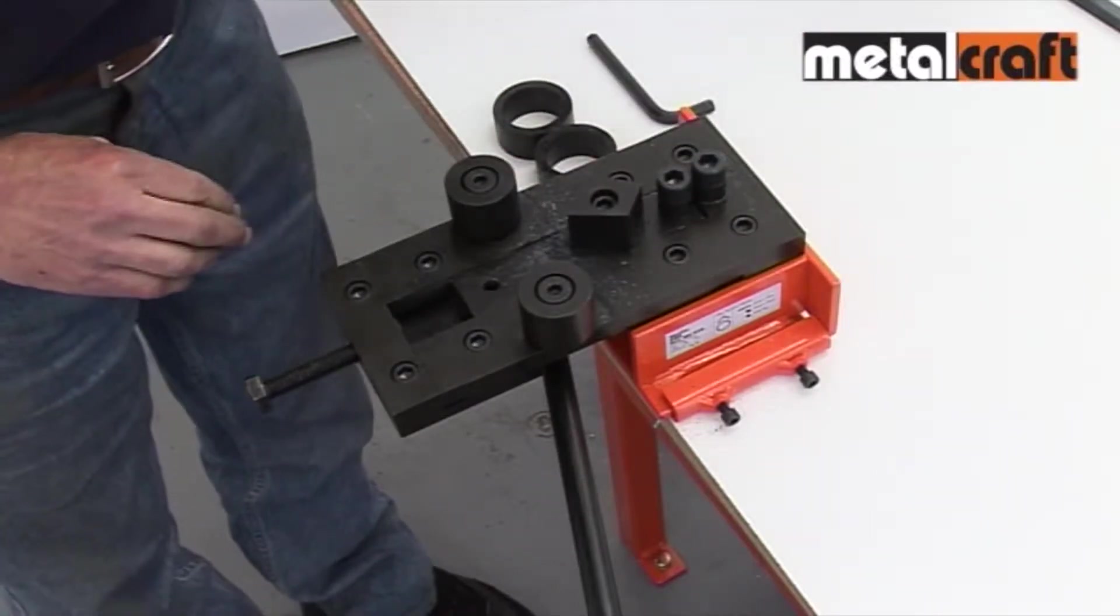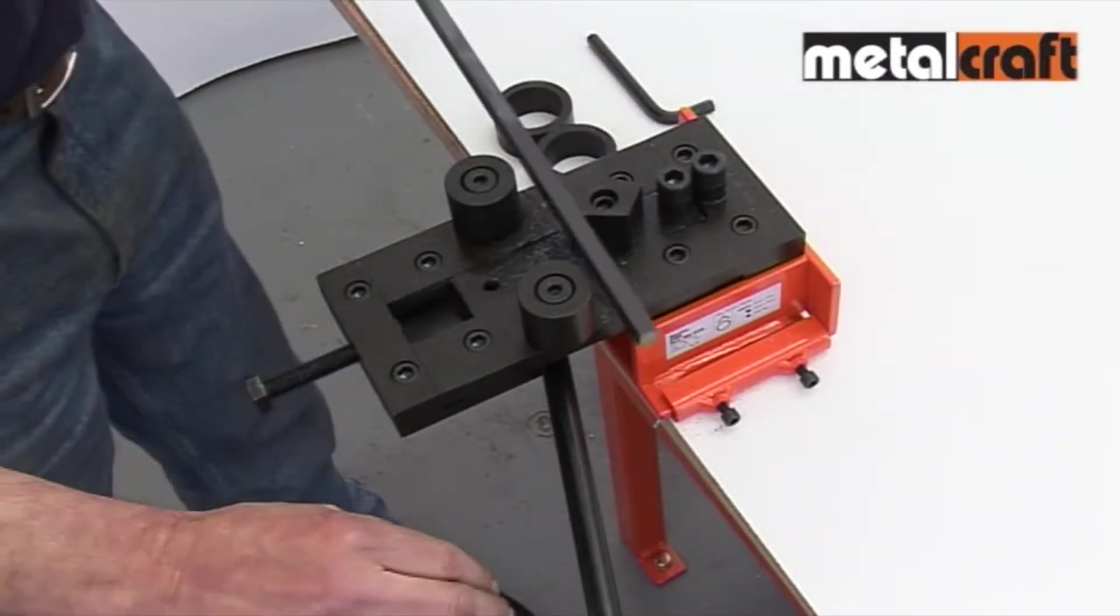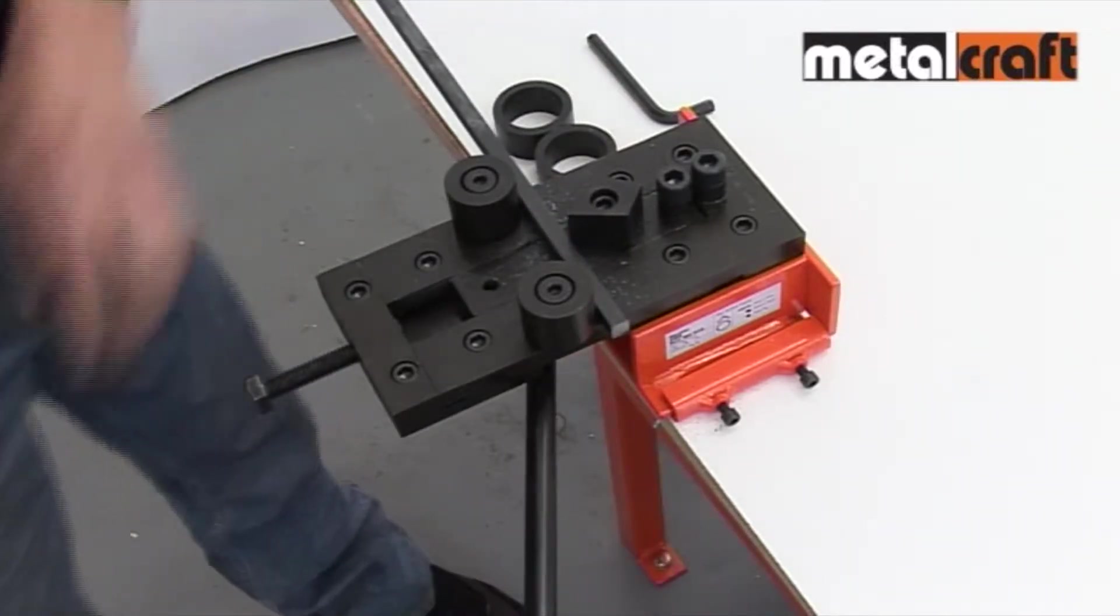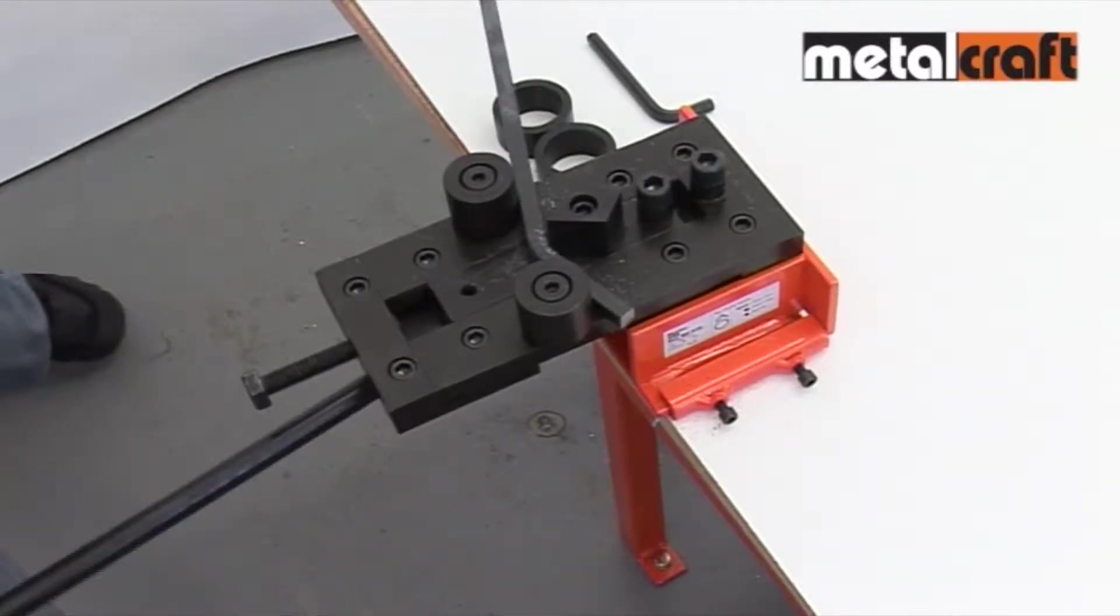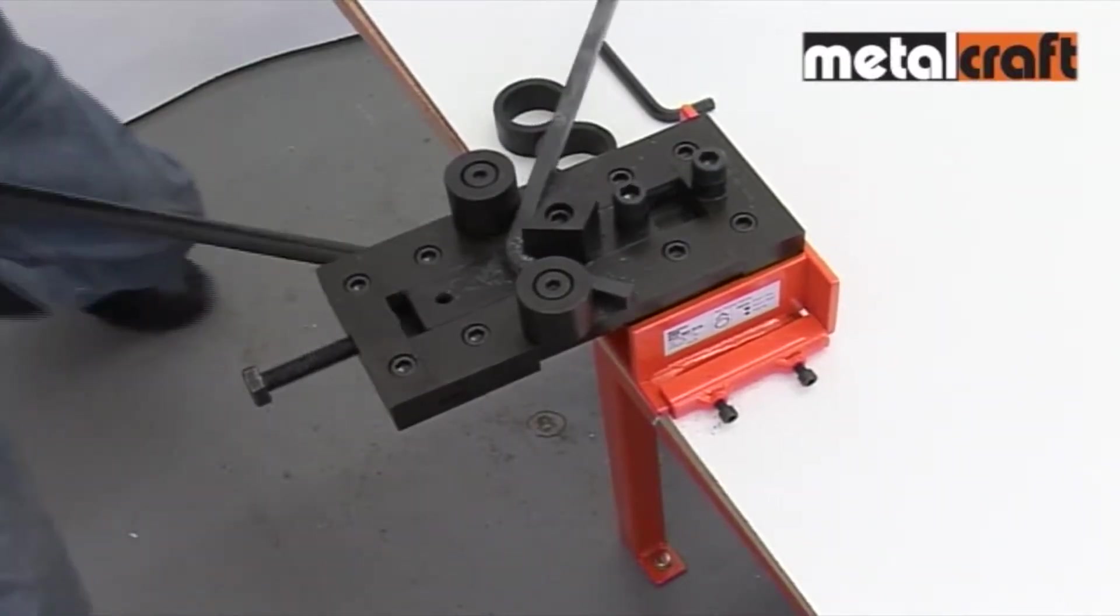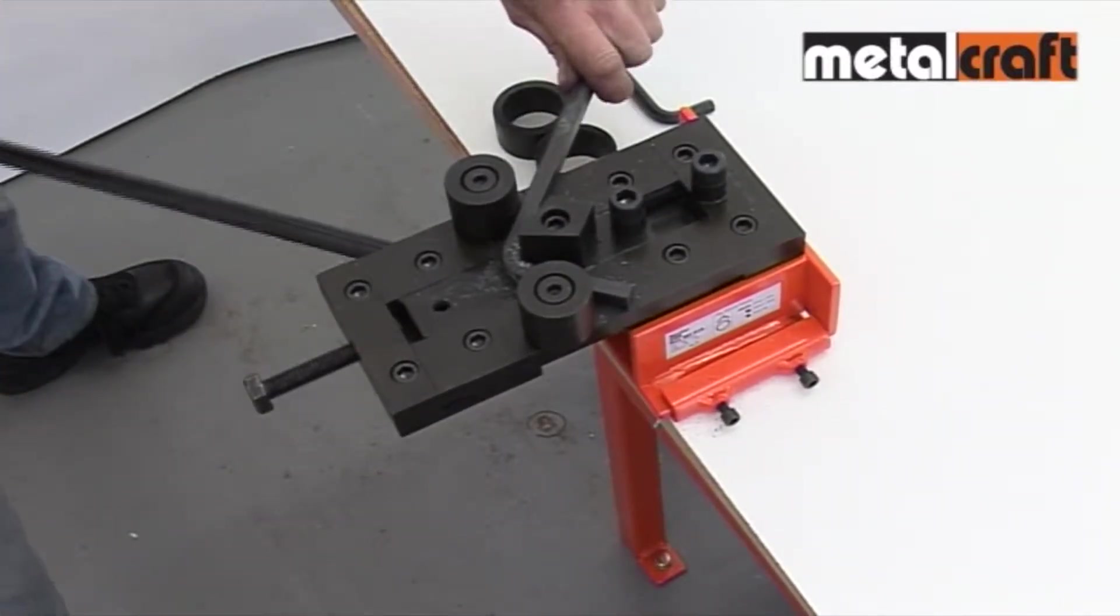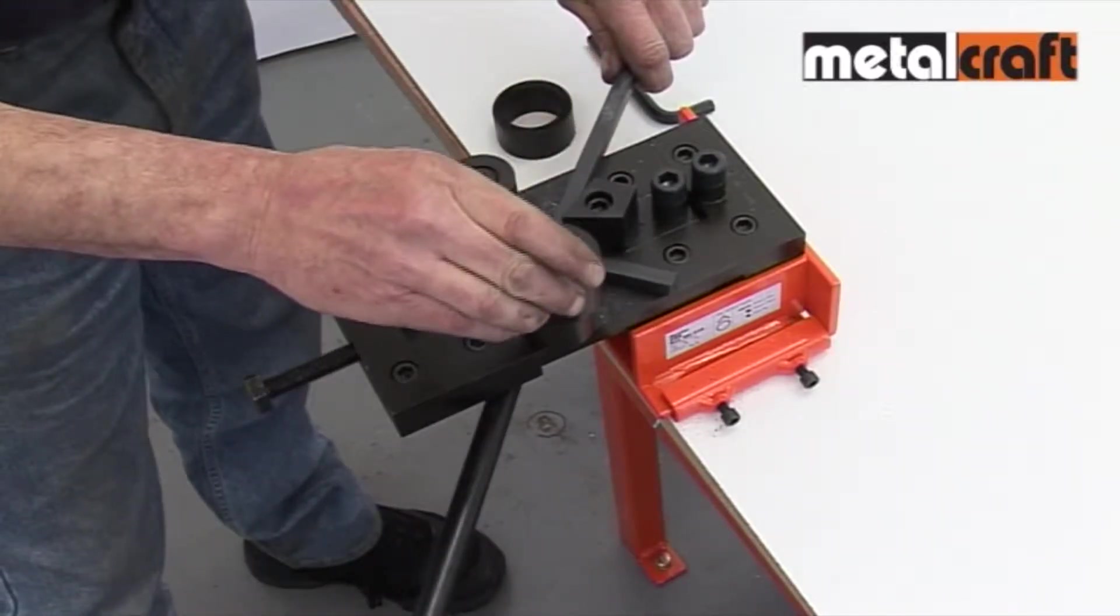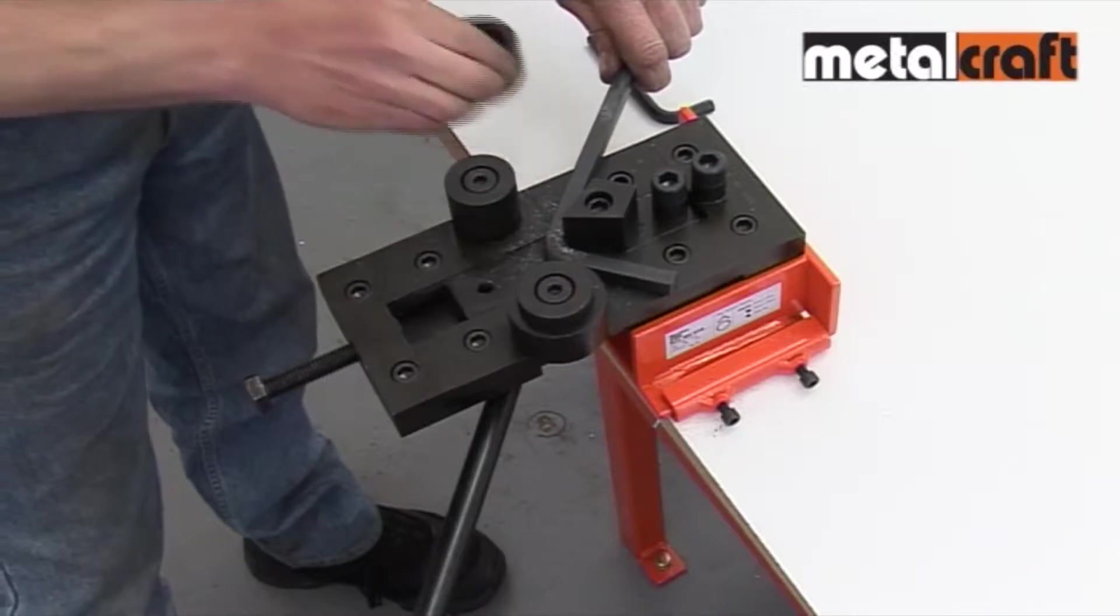you can produce sharp bends of up to 60 degrees on flat, round or square bar, using the drop-on sleeves as necessary to help ensure a tight bend.